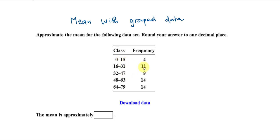So, the first step is to find the midpoint for each class. To find a midpoint, we simply add the two lower class limits and then divide by 2.